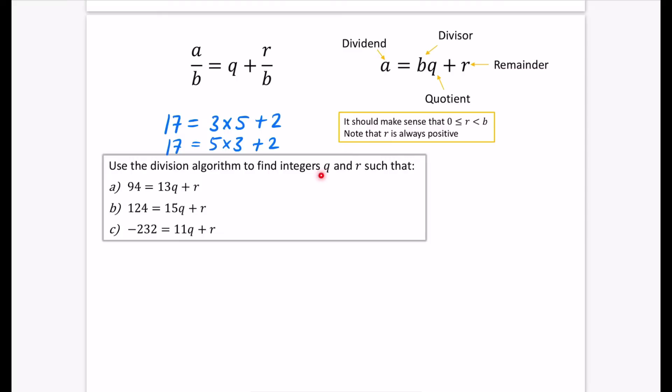So here it says, use the division algorithm to find integers q and r such that this is equal to this. So this is effectively, we're doing 94 divided by 13, and we're going to find out what's the quotient and what's the remainder that goes with it. So for part A of the question, what I do on my calculator is, and you don't need to write this down, but you would do 94 divided by 13, and 94 divided by 13 is 7.23, something like this, which tells me that therefore q is just going to be equal to 7. So 94 is equal to 13 multiplied by 7, and then all I need to do is find out what extra I need. So if I do 13 times 7, that's 91, so that means I need 3 extra for my remainder. So in this case, q is 7 and the remainder is 3.